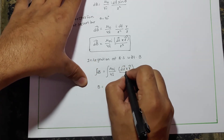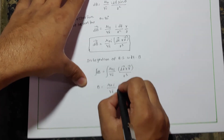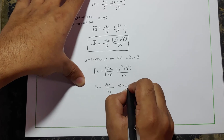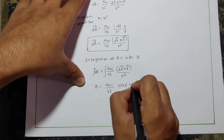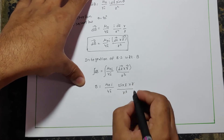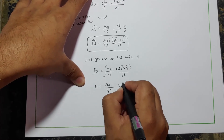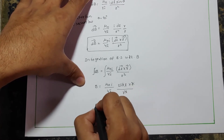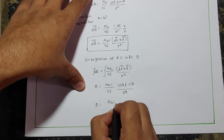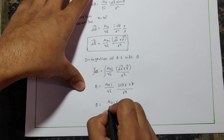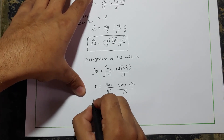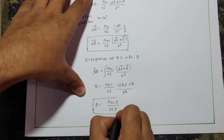Carrying out the integration gives 2πR·L divided by R³. The R terms cancel, which gives B = μ₀·I·L / (2π·R). This is the general integrated form of the Biot-Savart law.